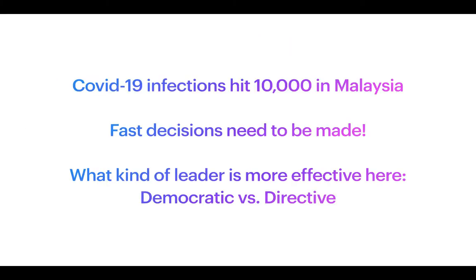For example, when Malaysia's COVID-19 infections almost hit 10,000 per day, fast decisions needed to be made quickly. A directive leader is more effective here — if you use the democratic style, you'd have to call 50 different departments to discuss and find a solution, which would take forever. You need to be more directive: quickly close the airports, close this, close that, and so on. Past research often overemphasizes the qualities of a democratic leader, but that's not necessarily always best.